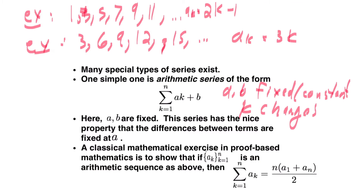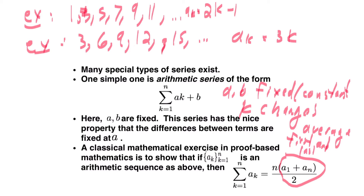These have the nice property that I don't change in a very complicated way between elements of my sequence. In particular, I can show a very nice result: if I want to add up elements of an arithmetic series, all I have to do is average the first and last elements and multiply by the number of things in my series. This is a very slick trick to add up many, many numbers in one very quick computation.